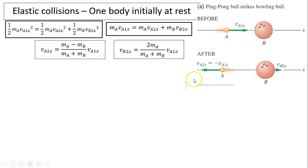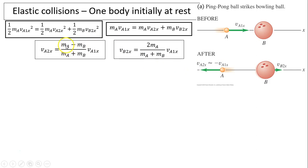Let's take a look at an example: a ping pong ball colliding with a bowling ball. The bowling ball was at rest and the ping pong ball was moving. Because the bowling ball has so much more mass than the ping pong ball, VA2x is almost equal to negative VA1x — almost bouncing back with the same velocity. So if you're going at 5 meters per second, you come back very close to 5 meters per second in the opposite direction, just slightly less.